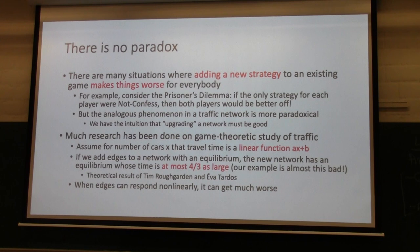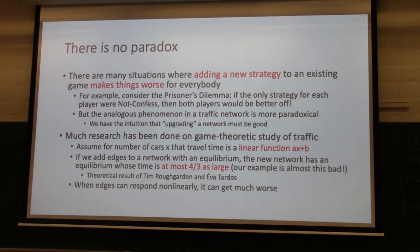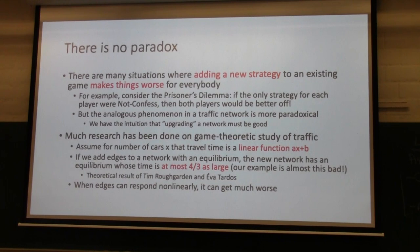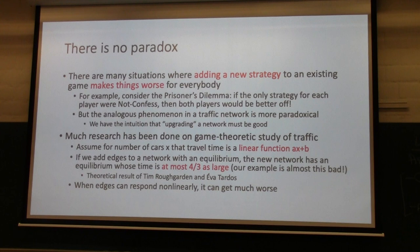Nash equilibrium is very important in traffic, and sometimes dominant strategies or Nash equilibria lead to worse results — just as we saw in other kinds of games, but here it happens in real traffic. This can also be applied to routing on the internet. If you add a link on the internet, the bandwidth can get worse. How you program the routers is important too. Now let me show another application: auctions.